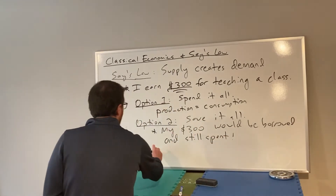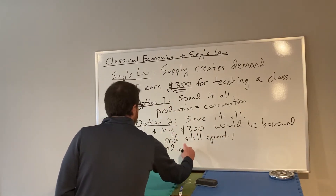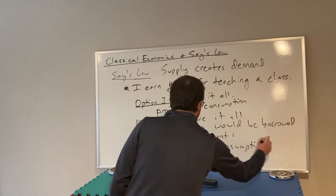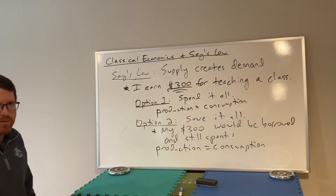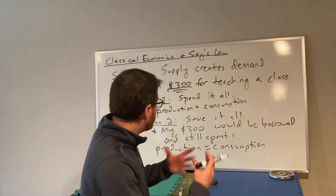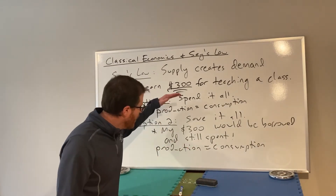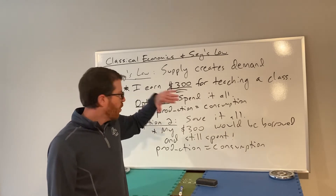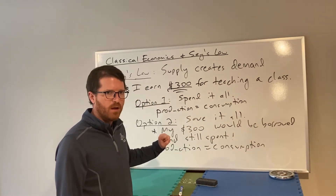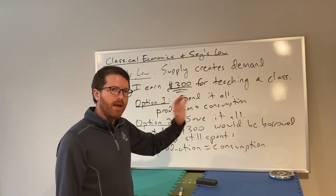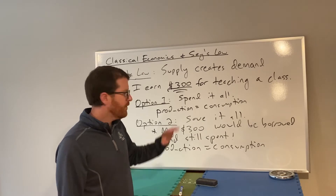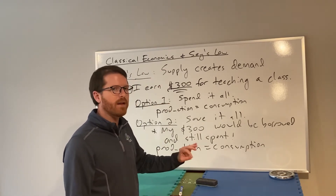So either way — regardless of whether I spend or save my money — my production would equal my consumption. For society as a whole, as long as people are spending or saving in a way that the financial market gets the money, supply will create demand. Production will create consumption. This is the crux upon which classical economics is based.